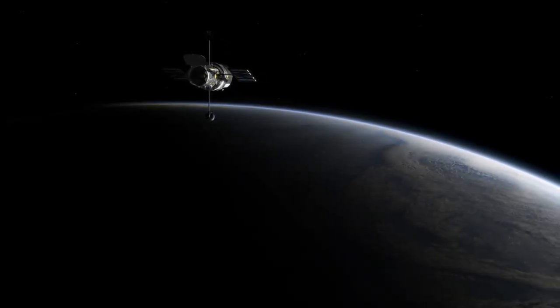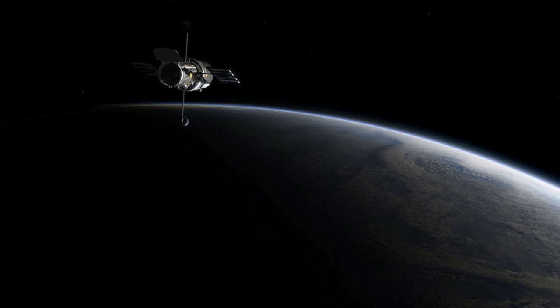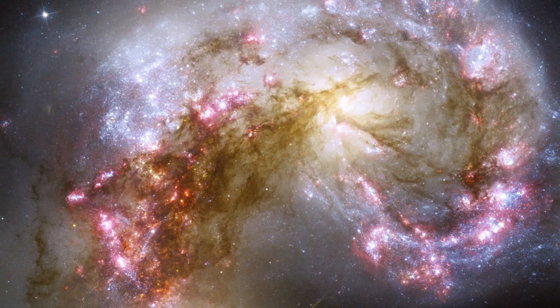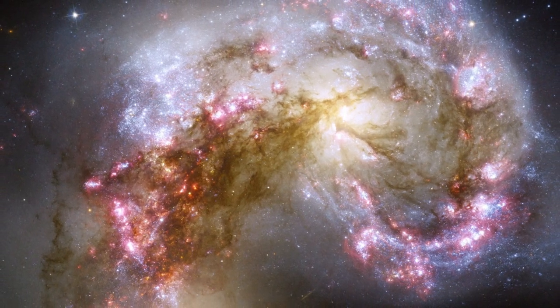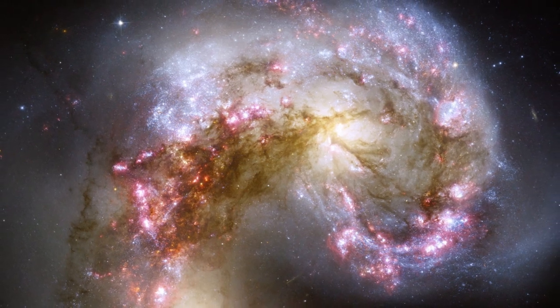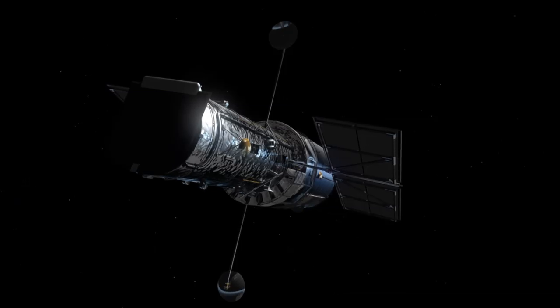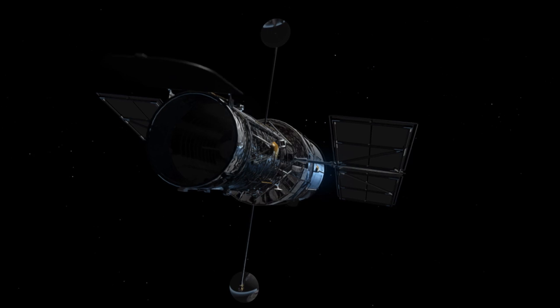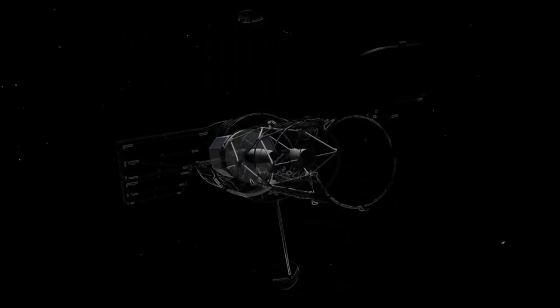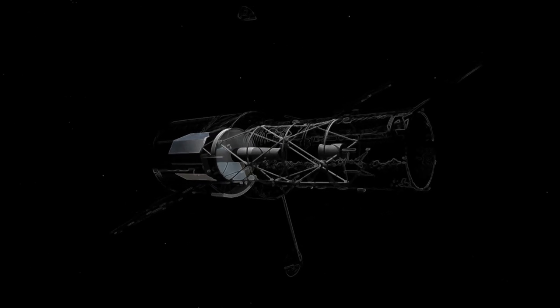The Hubble Space Telescope orbits approximately 570 kilometers above the Earth, where it observes the Universe free from the obstruction of our atmosphere. For nearly three decades, Hubble has studied the Universe using its 2.4-meter primary mirror and its five science instruments.